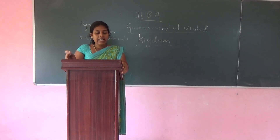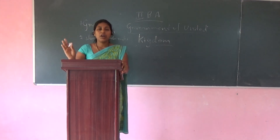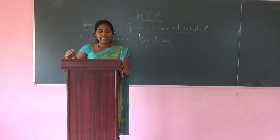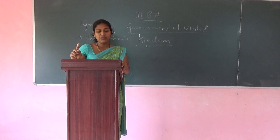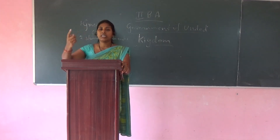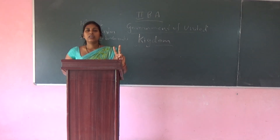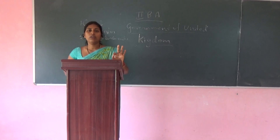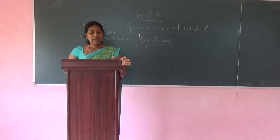The Parliamentary Reforms Acts of 1832, 1867, 1884, 1918, and 1928 transformed the House of Commons into a democratic institution.